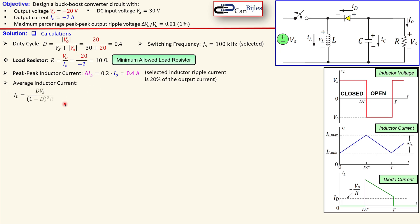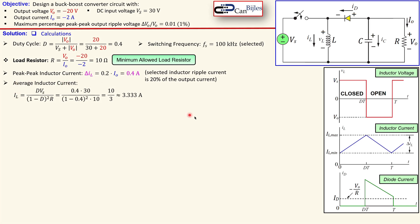The average inductor current can be calculated using this formula, which includes the duty cycle, input voltage, and resistor. Substituting the values — 0.4 for the duty cycle, the input voltage, and the resistor — we get 10 over 3 amps exactly, which is approximately 3.333 amperes for our average inductor current.